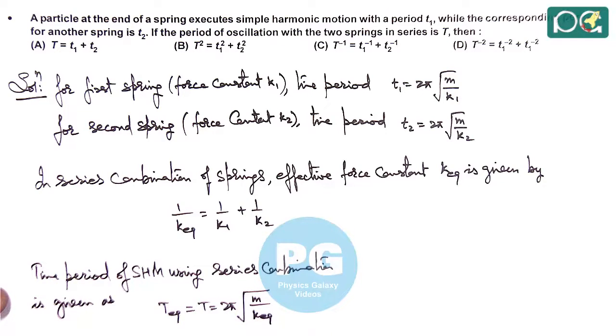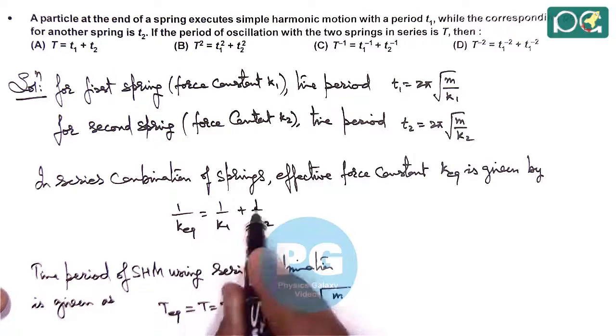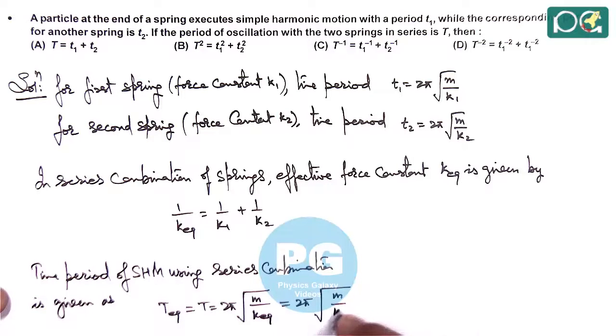Substituting the value, we get T = 2π√[M/(1/k1 + 1/k2)], which gives us 2π√(M/k1 + M/k2).